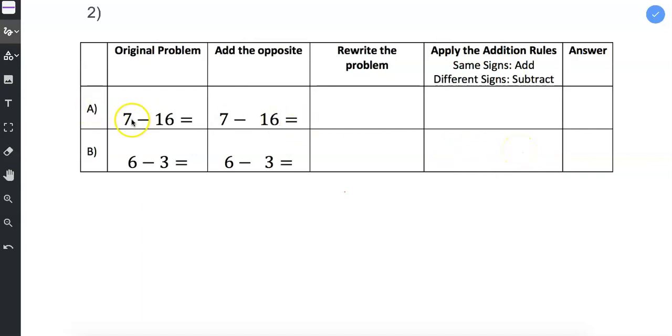Let's look at A. 7 minus 16. Well, to add the opposite, we change subtraction to addition, that's the first step,